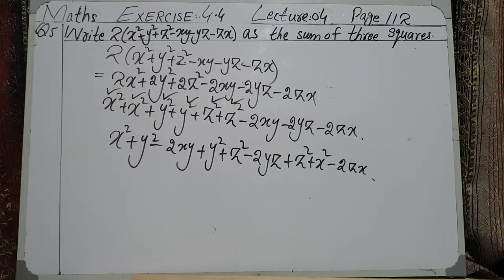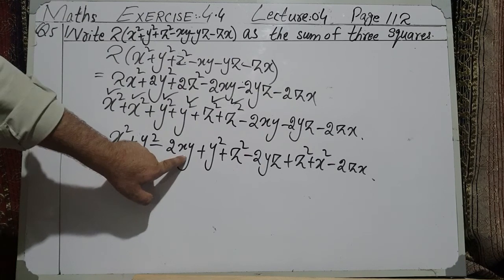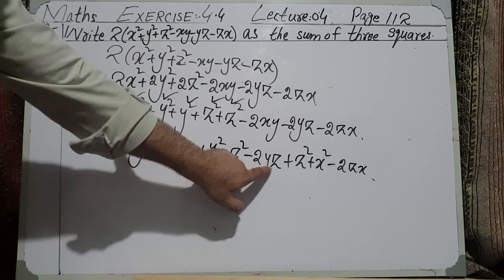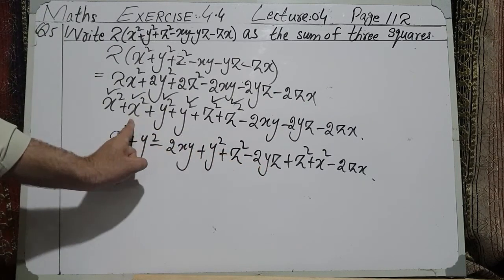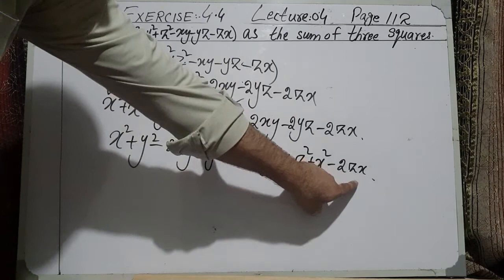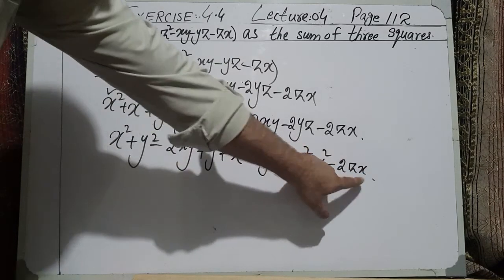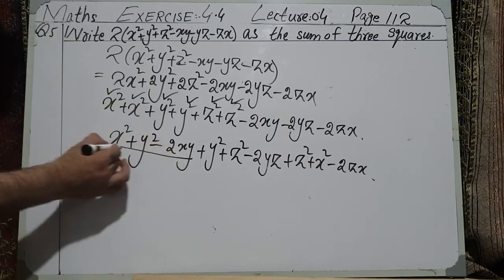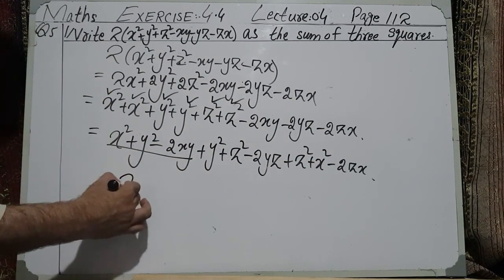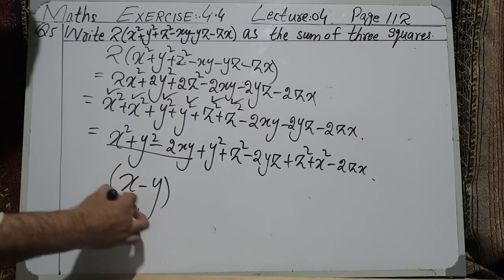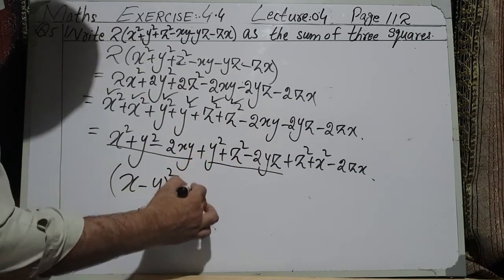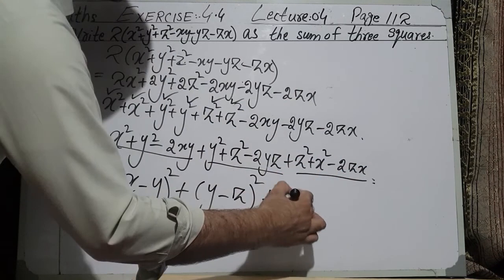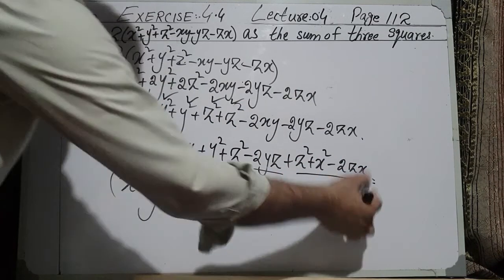If we compare with the formula, -2xy is of the form -2ab, and with it we need a² + b², which is present here. Similarly, -2yz means -2ab and needs a² + b², and -2zx also needs z² and x². So from each group the formula (a - b)² applies, giving us (a - b)² + (a - b)² + (a - b)².